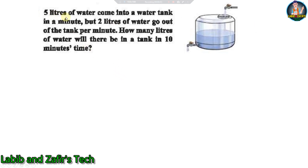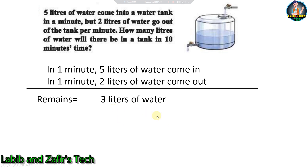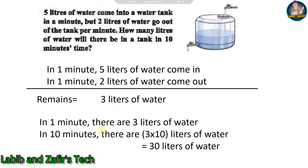First word problem: Five liters of water come into a water tank in a minute, but two liters of water go out of the tank per minute. How many liters of water will there be in the tank in 10 minutes? In one minute, five liters come in and two liters go out, so three liters remain per minute. In 10 minutes: 3 × 10 = 30 liters of water.